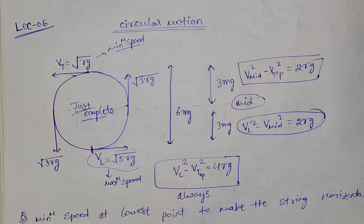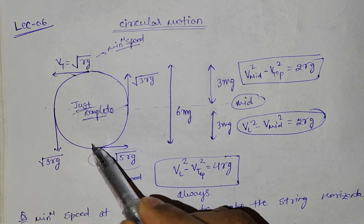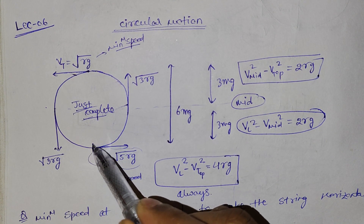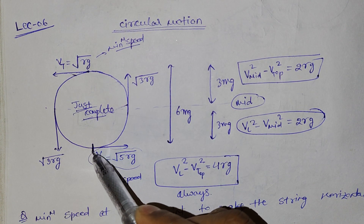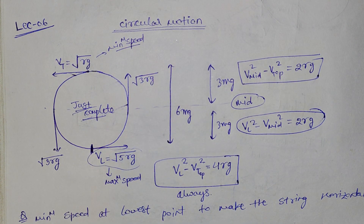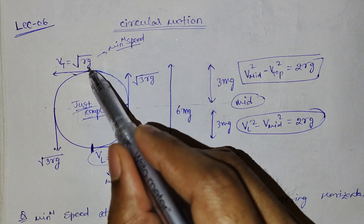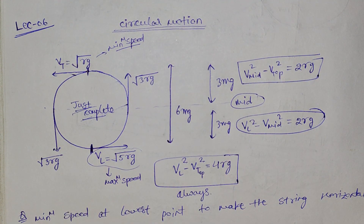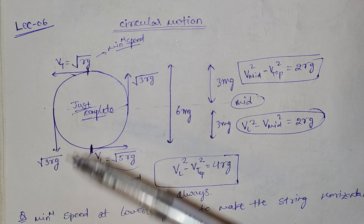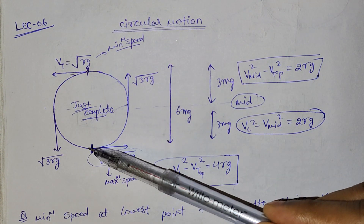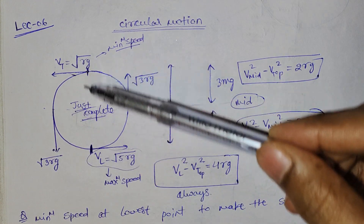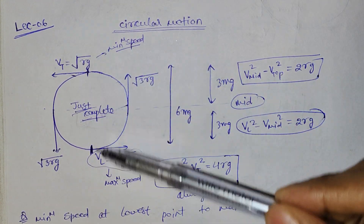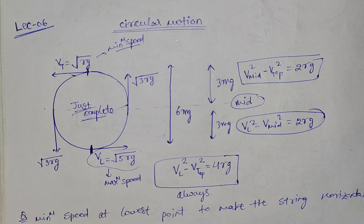At the top, the velocity is minimum and at the lowest point the velocity is maximum. The difference between the lowest point and the highest point velocity is important.